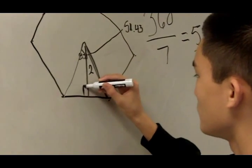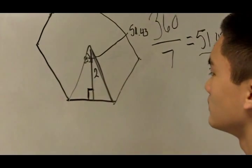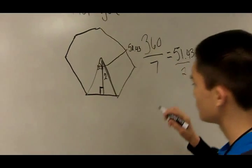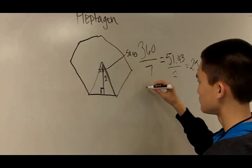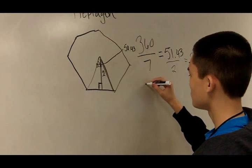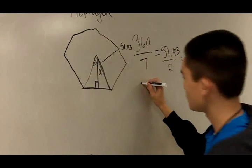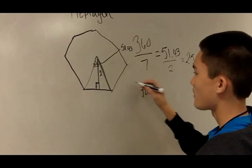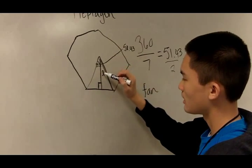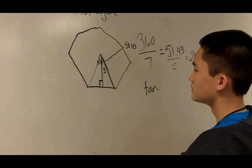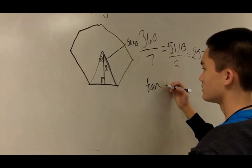Now I have a right triangle and I'm going to use trig. So it would be tangent because of the opposite and the adjacent.